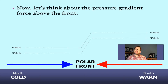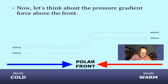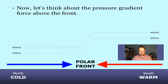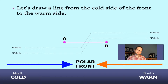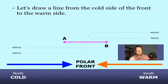Now let's think about what that means for the pressure gradient force aloft — in the middle and upper troposphere, above the polar front where these rapid changes in the heights of isobaric levels are happening. To help understand this, I'm going to draw a line between the cold side and the warm side, labeling one end A and the other B.